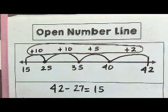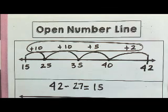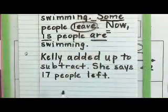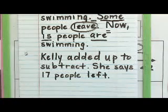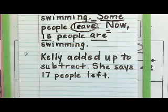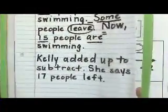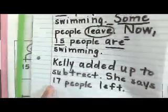So our answer would be 27 — that's our sum, the number we weren't sure about. So 42 minus 27 equals 15. Going back to the word problem, Kelly says that 17 people left. We can tell based on our work that our answer was 27. Kelly came up with an answer of 17. So while her strategy was correct in that she added up to get to her target number, her answer of 17 was incorrect.